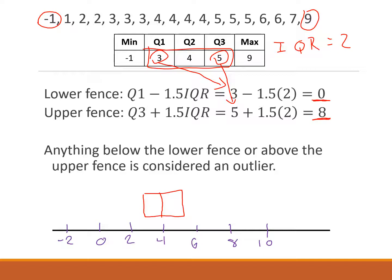Now the whiskers are going to go to the smallest number that's not an outlier, which is this 1 right here. So we draw a whisker down to 1 and then up to 7. And then we have an outlier at negative 1. I'm going to put a little asterisk there and an outlier at 9.